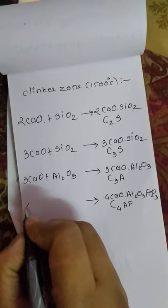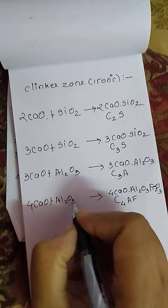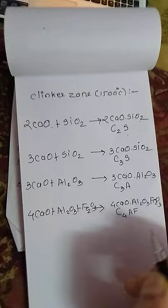Four molecules of CaO, one molecule of Al2O3, and one molecule of Fe2O3 forms C4AF clinker. This clinker can then be cooled down in a tank.